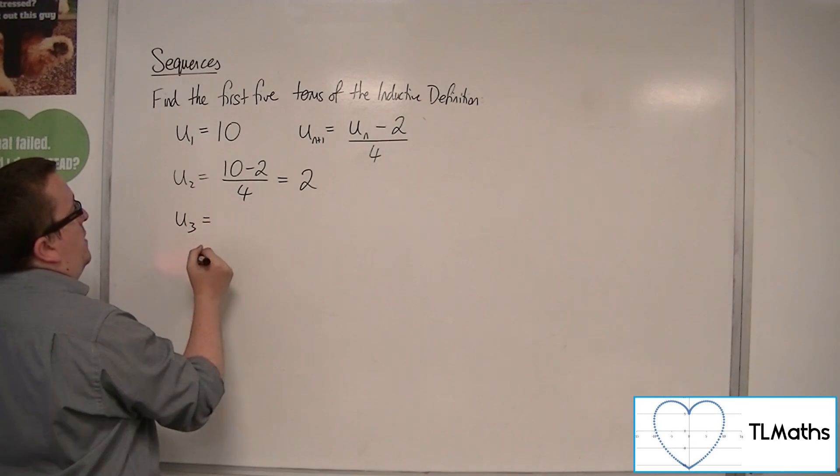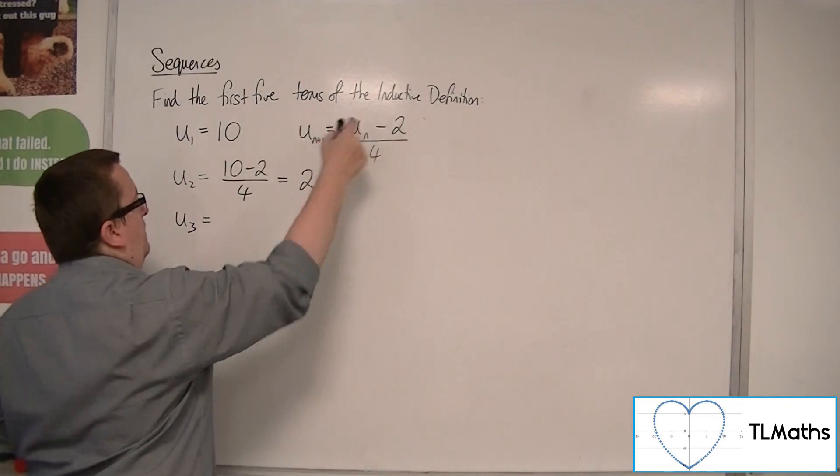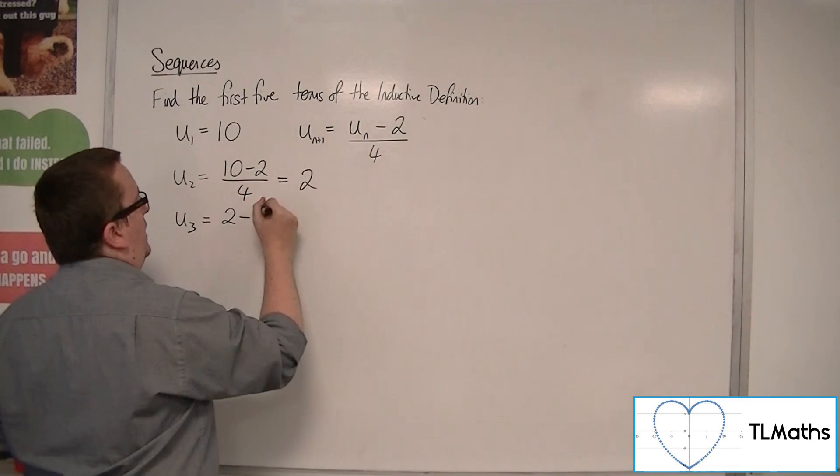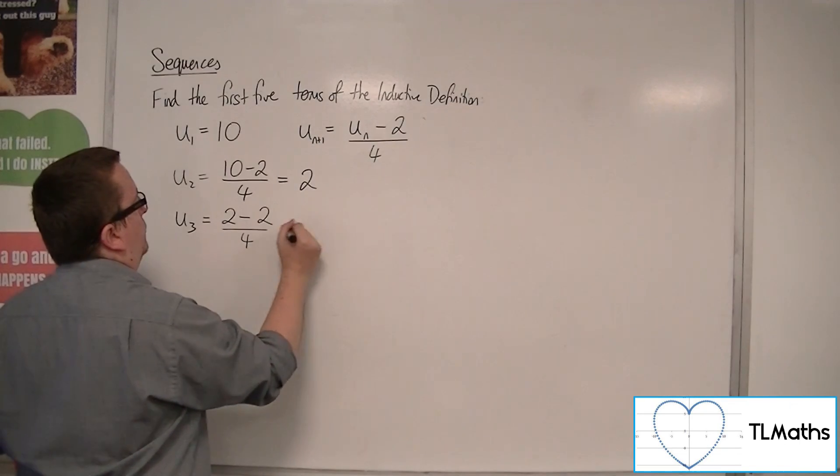Then u3 will be the previous term, 2, take away 2, divided by 4, which is 0.